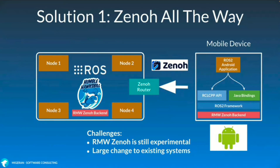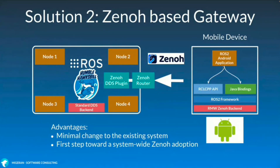The ARM Zenoh implementation is still experimental. When we have an existing system with its own release schedule and its own set of risks to manage, this is a large change, so it has to be planned carefully and takes more time to implement. An option is using a Zenoh-based gateway and leveraging the Zenoh DDS plugin, where the mobile device can still use the Zenoh backend and communicate with the Zenoh router, but inside the main system the DDS plugin can be used and all the other components can still use the standard DDS backend — it can be Cyclone DDS, FastRTPS, or whichever DDS backend is working best for them.